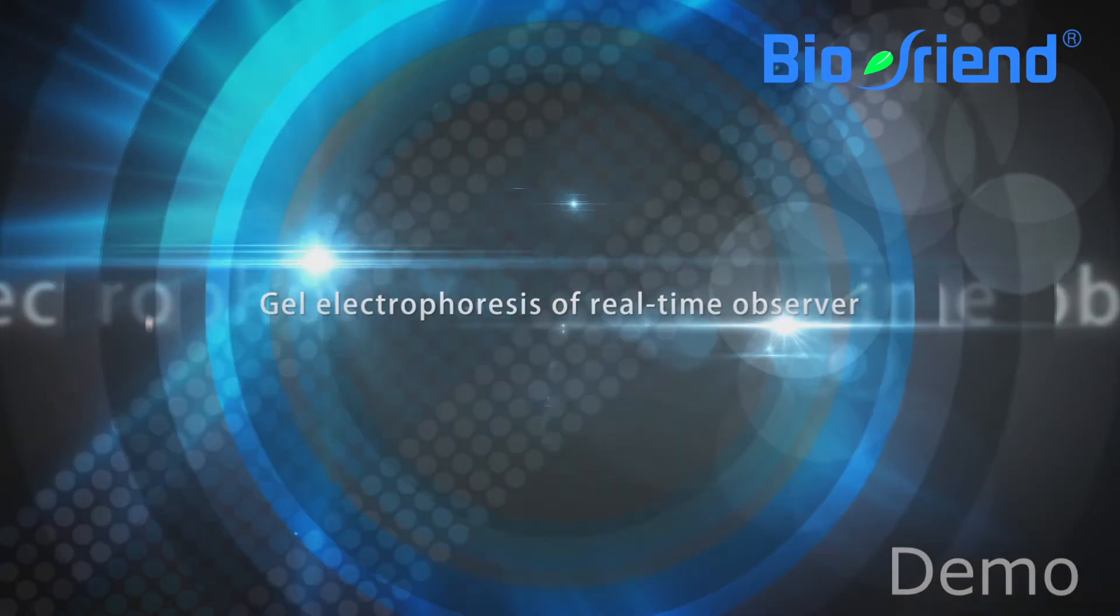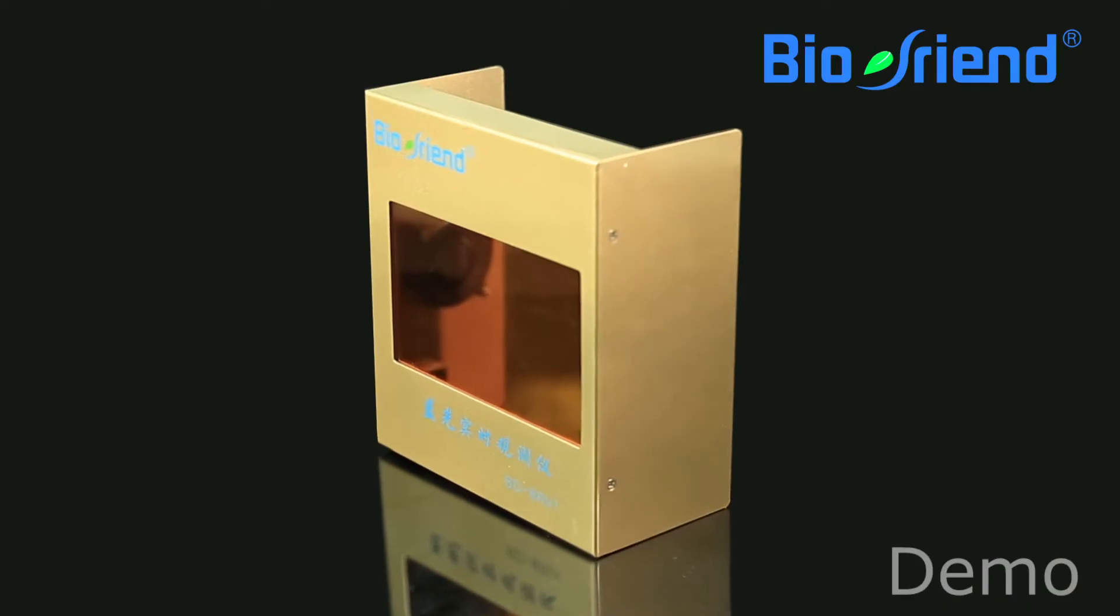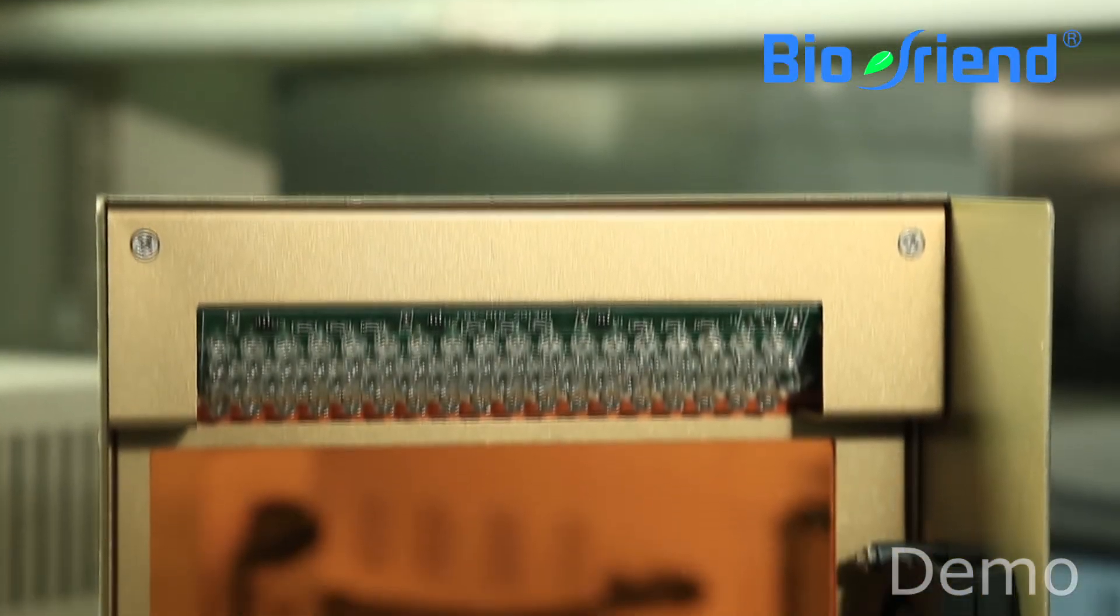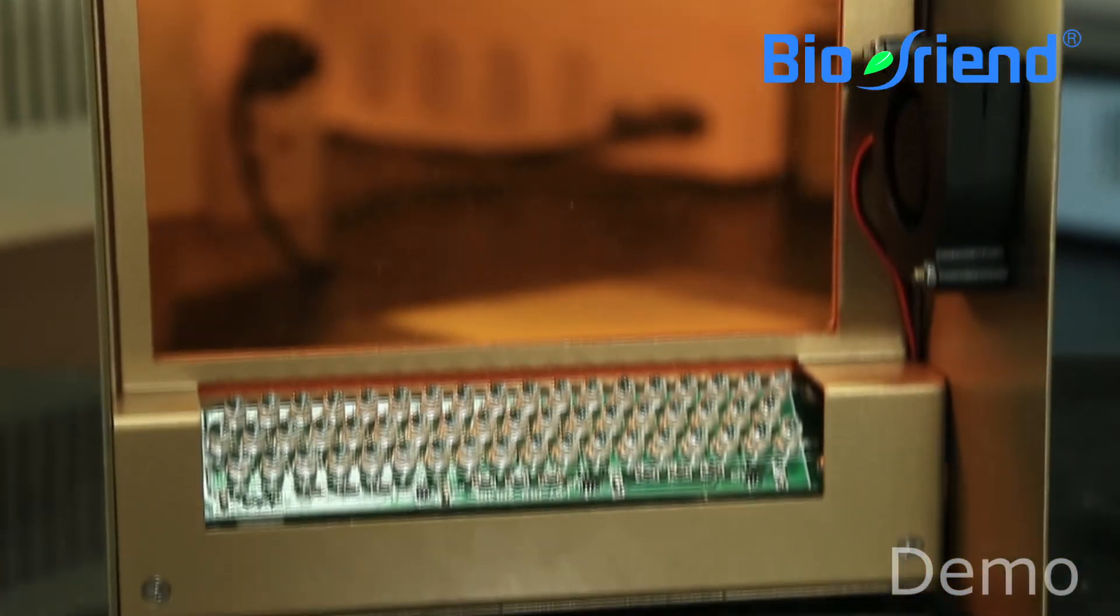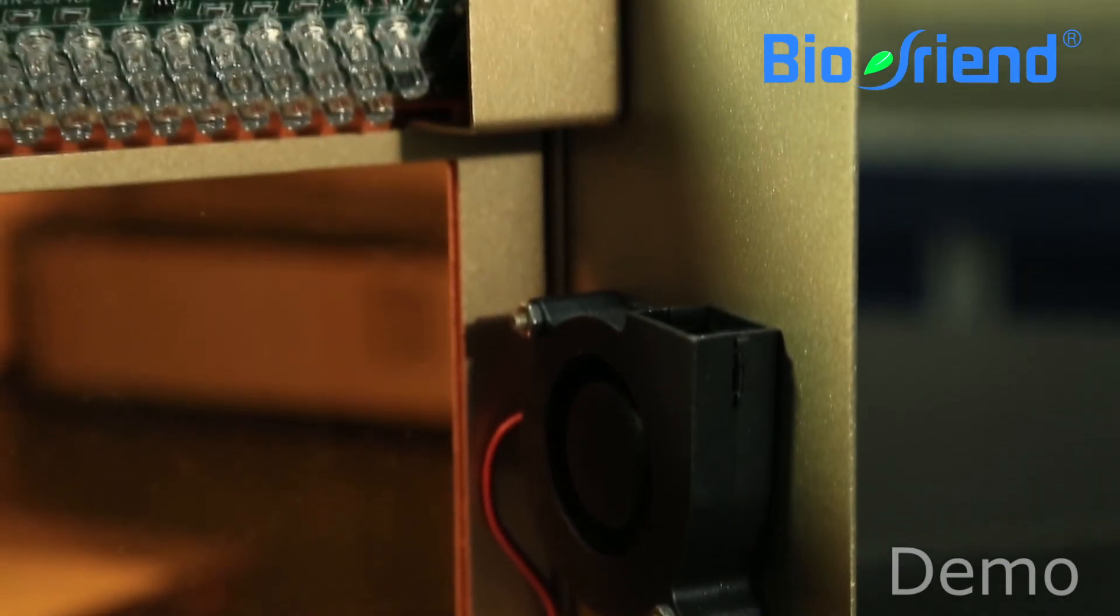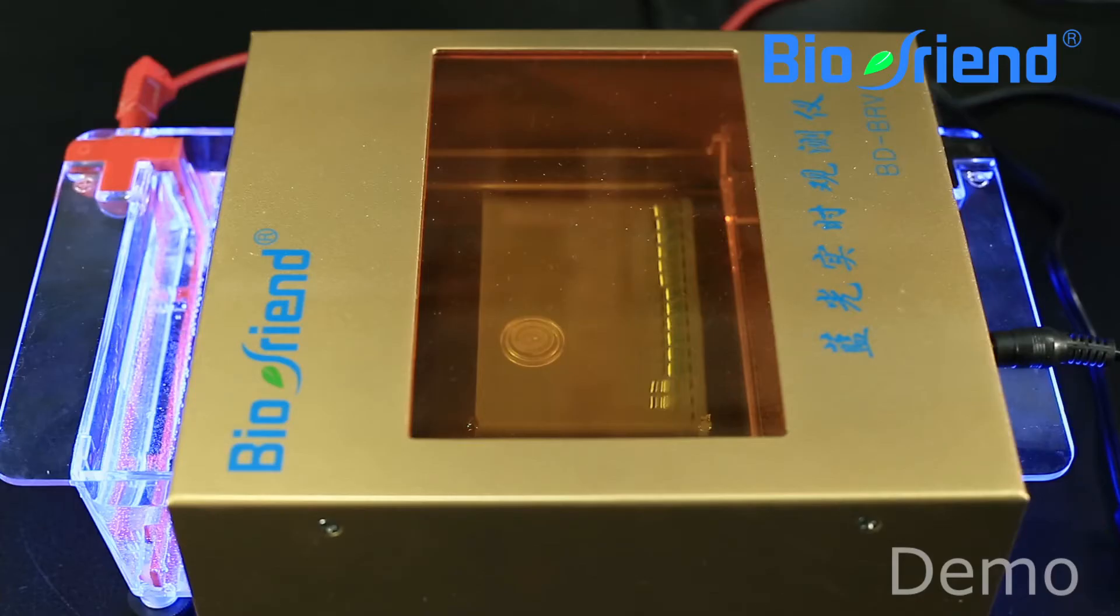Second, let me show you this BioFriend Real-Time Blue Light Observer. BioFriend Real-Time Blue Light Observer is equipped with blue light LEDs and an anti-fogging unit to allow for immediate visualization of DNA and RNA bands while running electrophoresis.